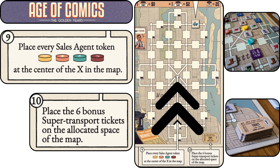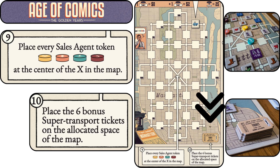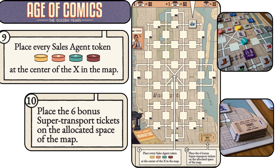Step 9: Place every sales agent token at the center of the X on the map. Step 10: Place the 6 bonus super transport tickets on the allocated space of the map.